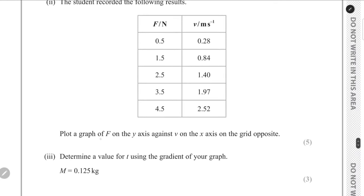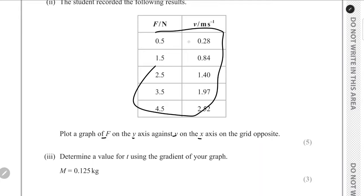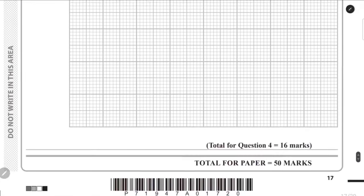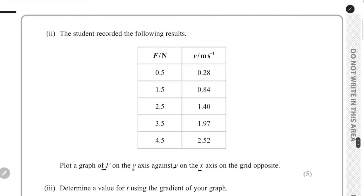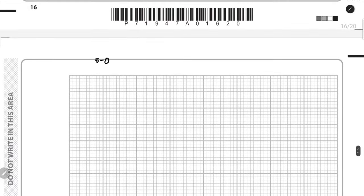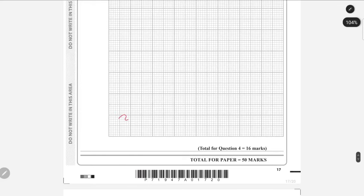For part C2, we need to plot a graph of F (y-axis) against v (x-axis). The F values range from 0.5 to 4.5 N, and the v values range from 0.28 to 2.52 m/s. The y-axis scale goes from 0 to 4.5 in increments of 0.5, and the x-axis scale goes from 0 to 2.55 in increments of 0.5. We label the axes: force in newtons and velocity in meters per second.